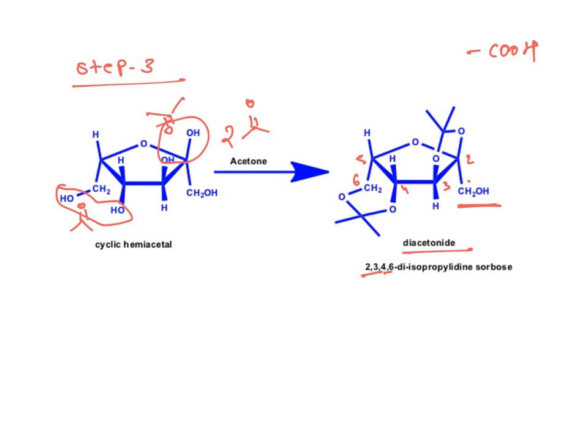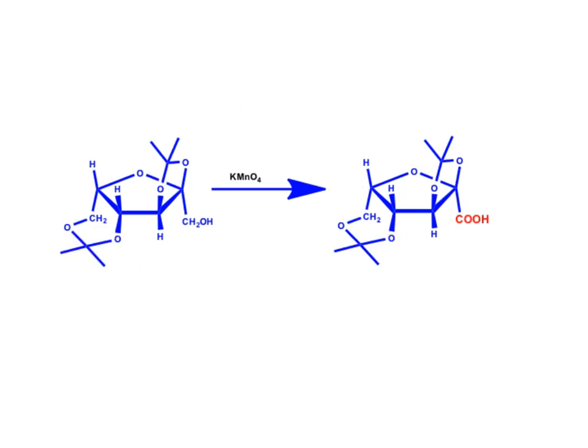Now, we can go for the oxidation of this primary alcohol by taking oxidizing agent. In next step, we are converting primary alcohol into carboxylic acid by taking suitable oxidizing agent, potassium permanganate in alkaline medium which converts the primary alcohol into carboxylic acid. Now, the purpose of protection is it should not involve in the reaction. Now, selectively, we have converted this primary alcohol into acid.